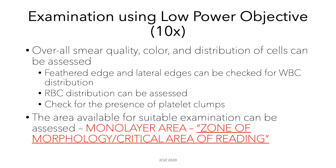Using the low power objective, you can assess overall smear quality, color, and distribution of cells. For example, on the feathered edge and lateral edges, you can check for WBC distribution. You can also see if your RBCs are properly distributed and not clumped, and check if there are any platelet clumps using the low power objective.